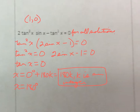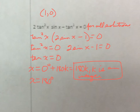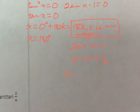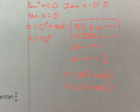For the sine factor: 2 sine x minus 1 equals 0. Adding 1 gives 2 sine x equals 1, so sine x equals 1/2. Sine equals 1/2 on the unit circle at 30 degrees and 150 degrees. Adding 360k to those gives 30 plus 360k and 150 plus 360k, where k is an integer.